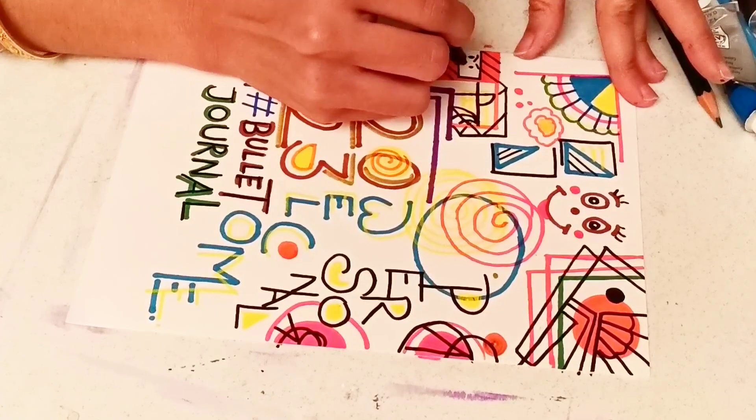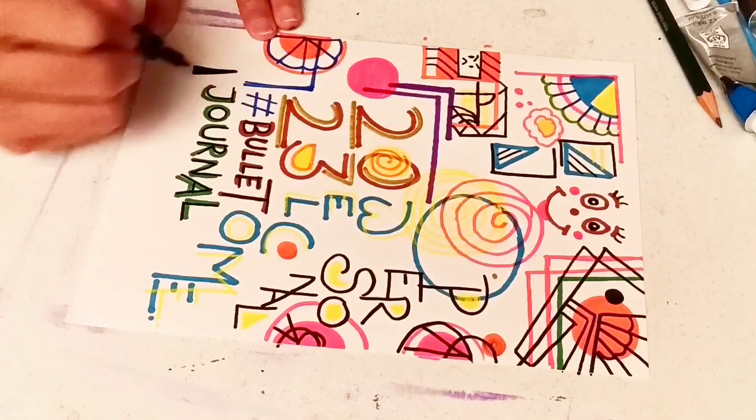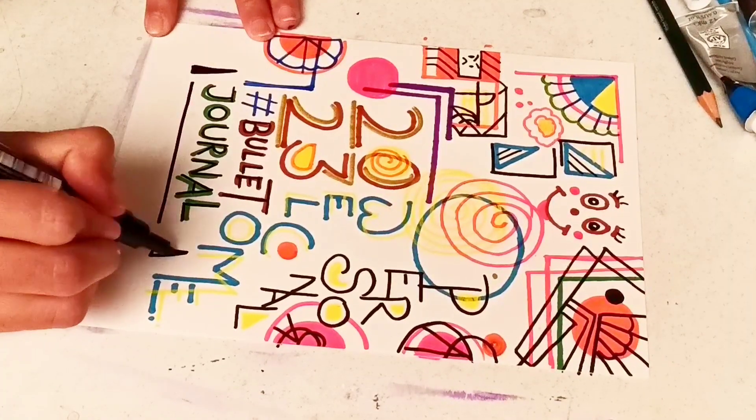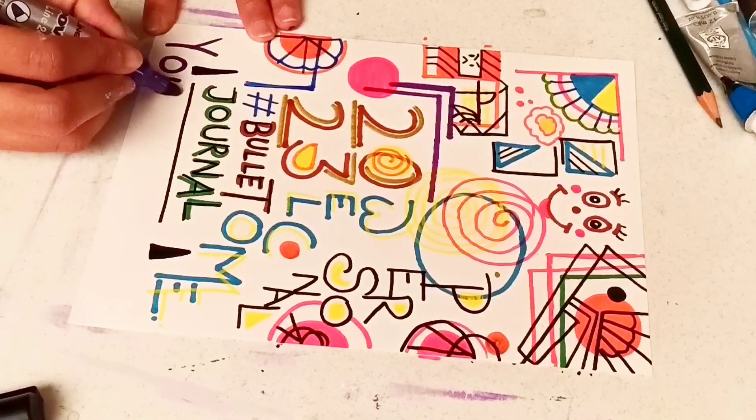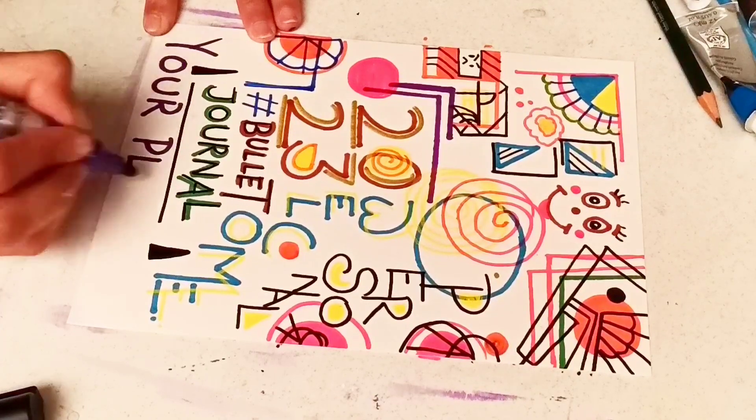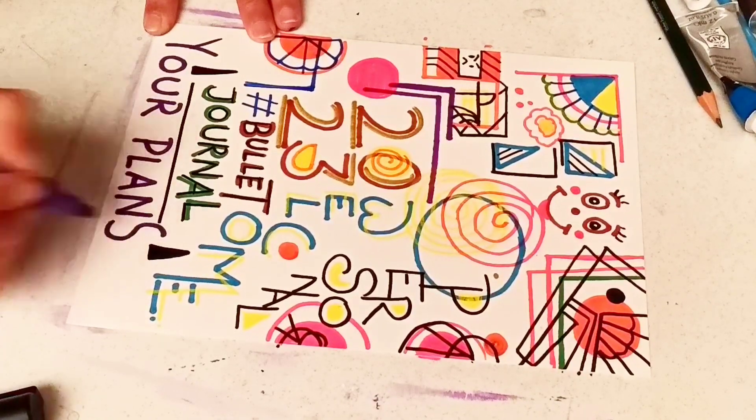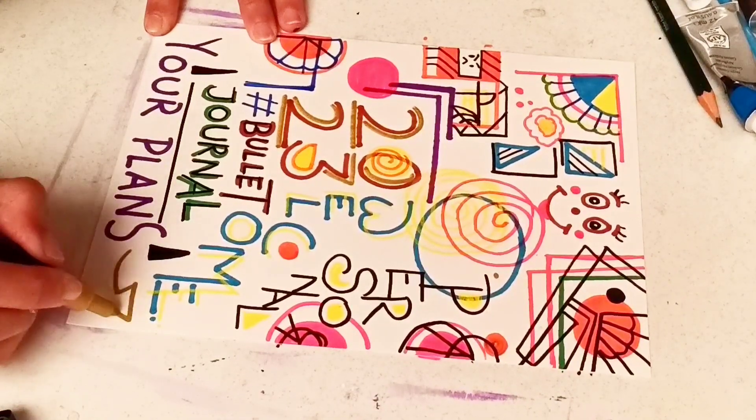I'm still continuing the decoration. See, there are two faces I've drawn. Just find where the two faces are - two expressions I've given to the faces. And see here, I'm writing 'your plans'. Now it's almost done.